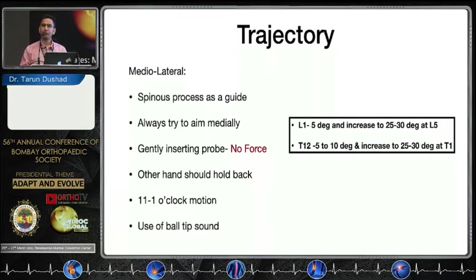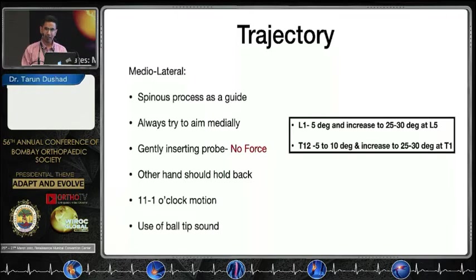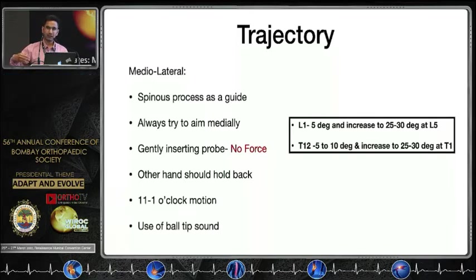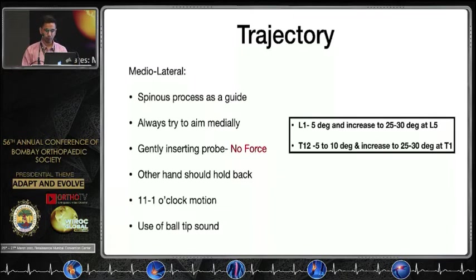Always use a gentle rotation from 11 to 1 o'clock. If entry is difficult, use a ball-tip probe to push the cancellous bone inside the tunnel. Once you pass through the tunnel and insert the probe into the vertebral body, the vertebral body is receptive to the probe.